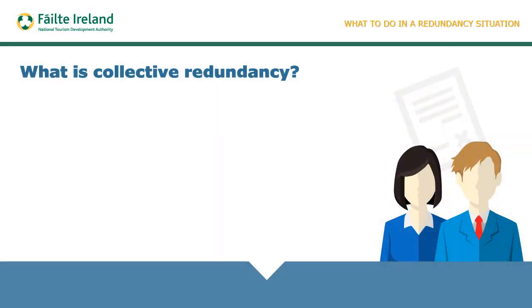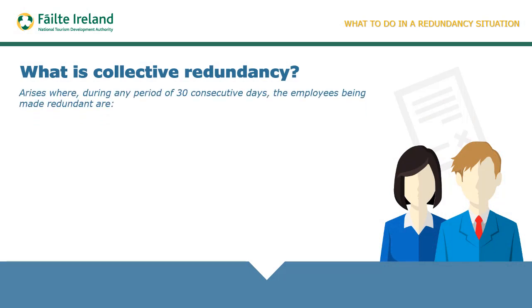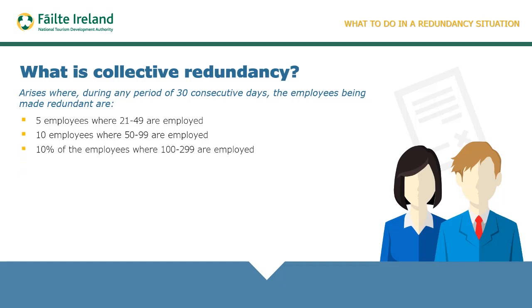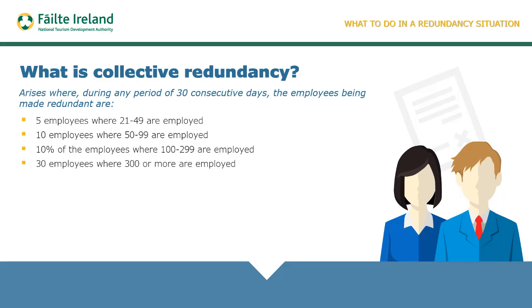When a number of employees are being made redundant within a 30-day period, this is known as a collective redundancy, which arises where during any period of 30 consecutive days: five employees where there are 21 to 49 employees; 10 employees where there are 50 to 99 employees; 10% of employees where there are over 100 up to 299; or 30 employees where there are 300 or more employees.